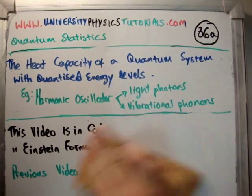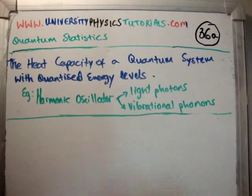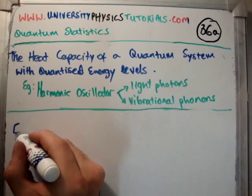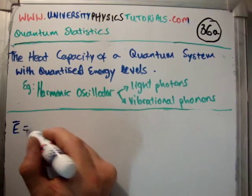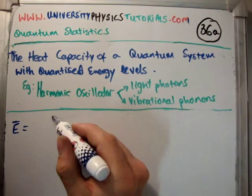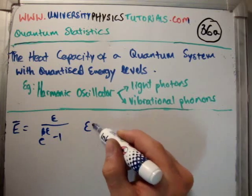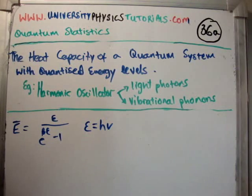So to do a small bit of revision, in the previous video we used the partition function in order to calculate the average energy of a single harmonic oscillator. The average energy of a single harmonic oscillator was epsilon over e to the beta epsilon minus 1. For epsilon it is the quantum of energy H nu.